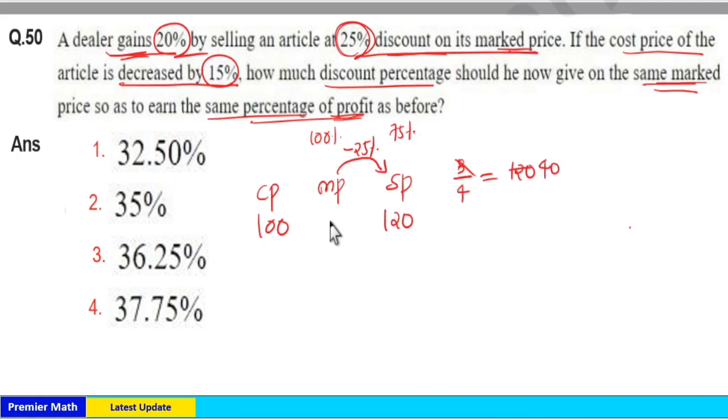1 means 100%, 100% is 160. That is, here 75% of mark price, which is 3 by 4 of mark price, equals 120 rupees. Then mark price equals 160 rupees. So this is the first case.